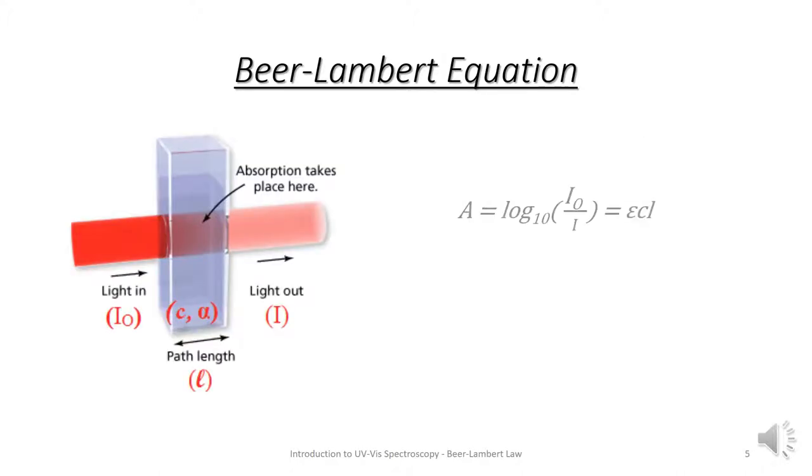If we put these two equations together we get the Beer-Lambert equation, which states that A equals ECl.